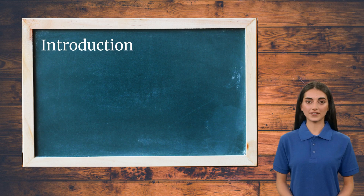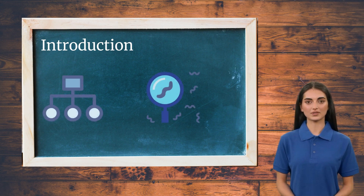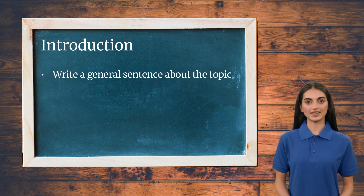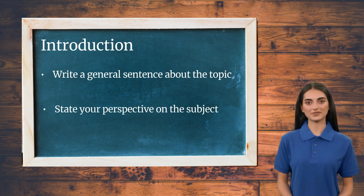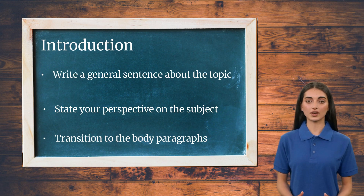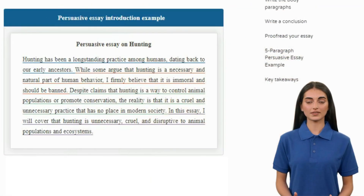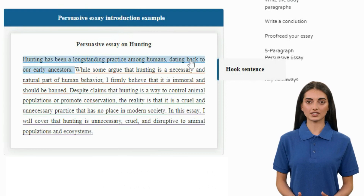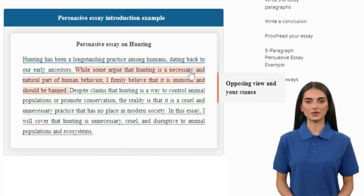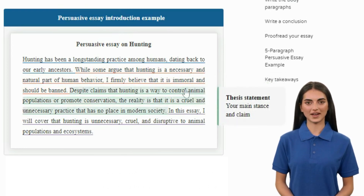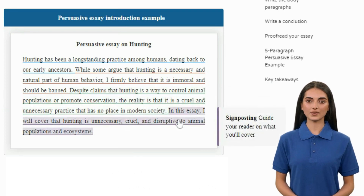The introduction will be the first paragraph of your persuasive essay, so it should go from general to specific. Start this paragraph by writing a general sentence about the problem or topic you will talk about. Then state your thoughts and perspective on the topic, which is called a thesis statement. Finally, make sure to transition to the body paragraphs by guiding the reader through what you will cover in the essay. In an example about hunting, it starts with a hook sentence to draw the reader's attention, then states both the opposing view and the writer's stance. The thesis statement provides the main claim on the ethical concerns about hunting. Lastly, the writer mentions what they will cover in the essay — what we call signposting.